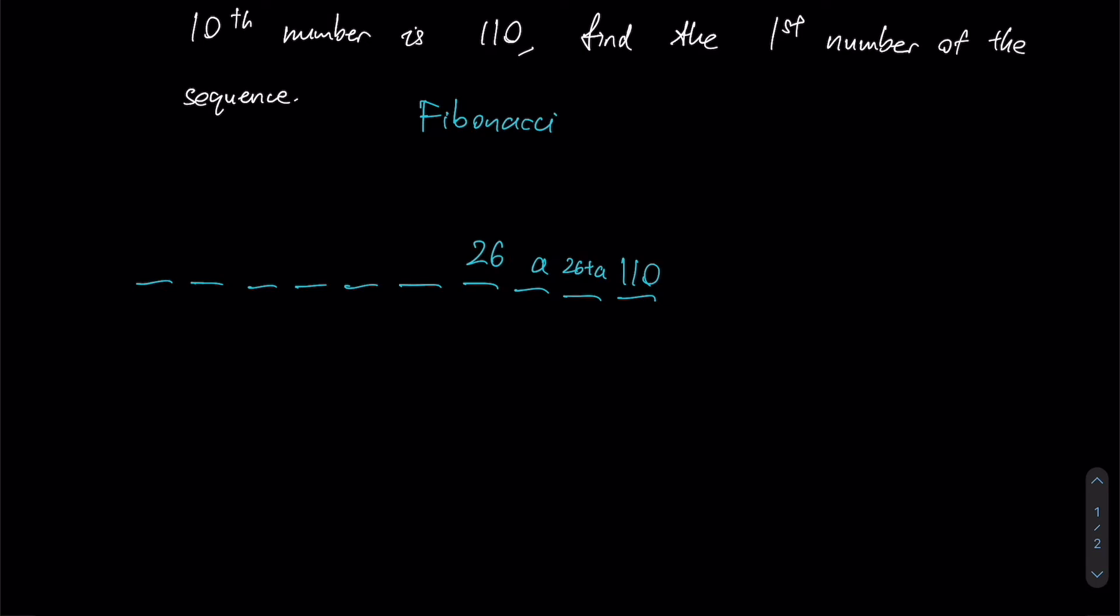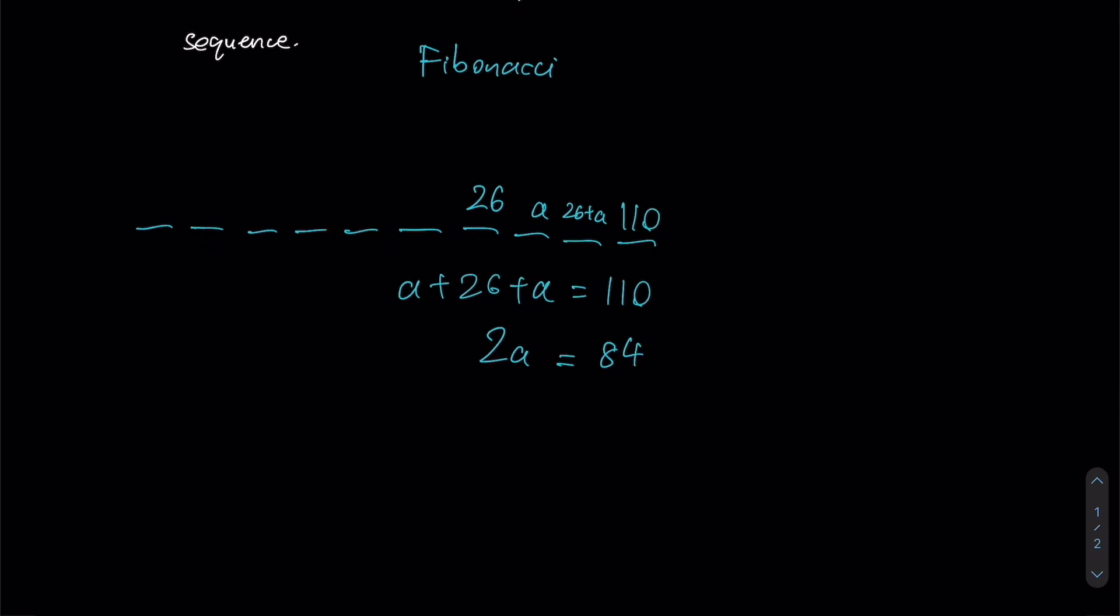This is what we can construct. Notice I now have two copies of a, and I can subtract both sides by 26, which means that I am left with 84 on my right hand side. So 2a equals 84, therefore a equals 42.